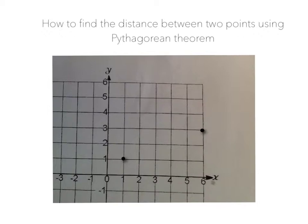What you're going to want to do is start at one coordinate and work your way over directly under the other coordinate to make a right angle. Then you're going to want to connect them with the side that we will be finding, which is called the hypotenuse.